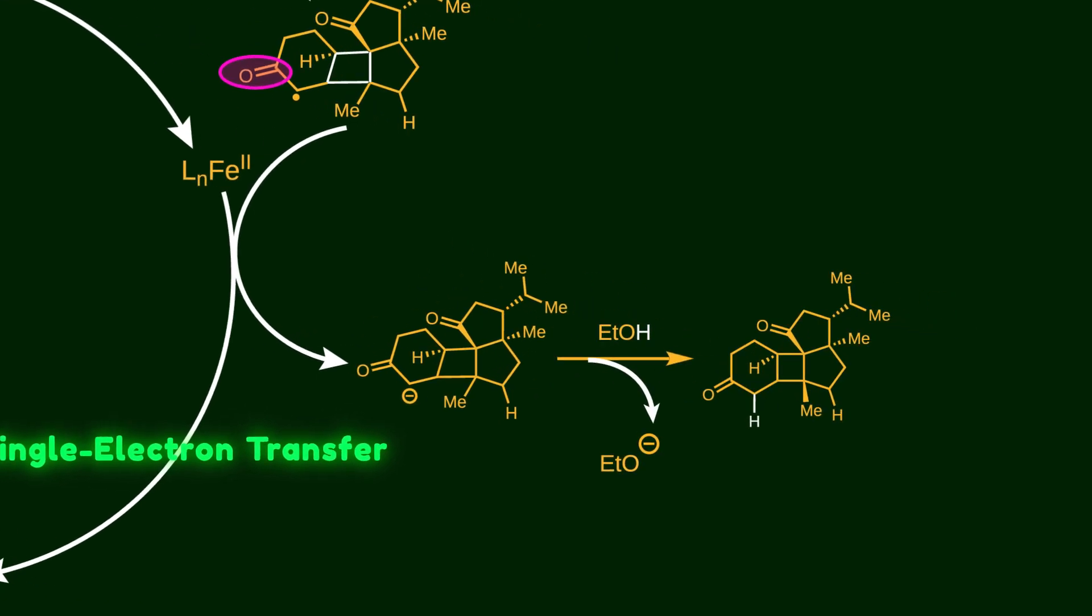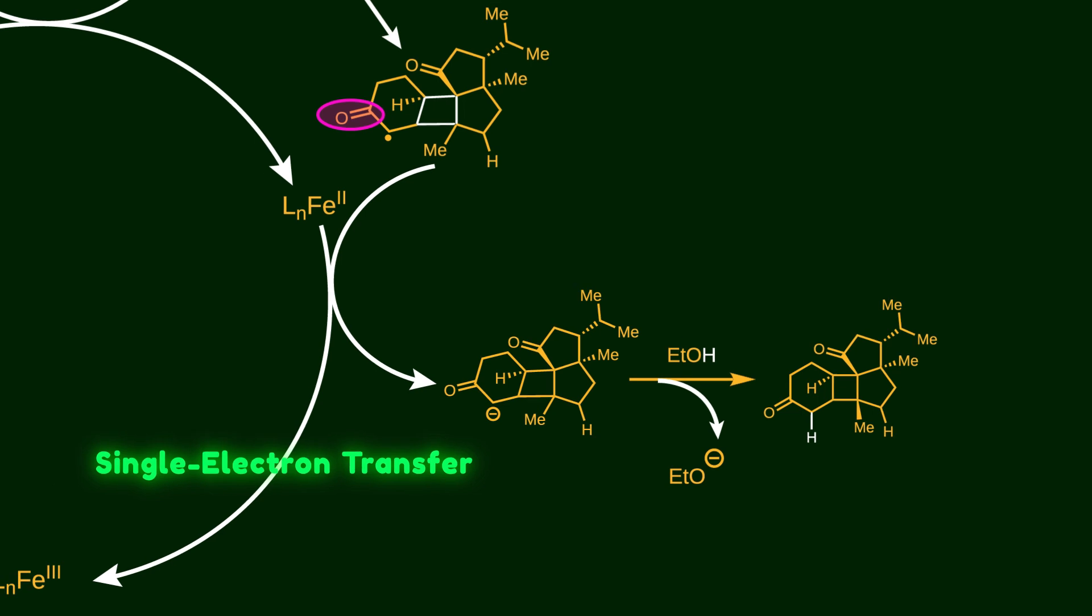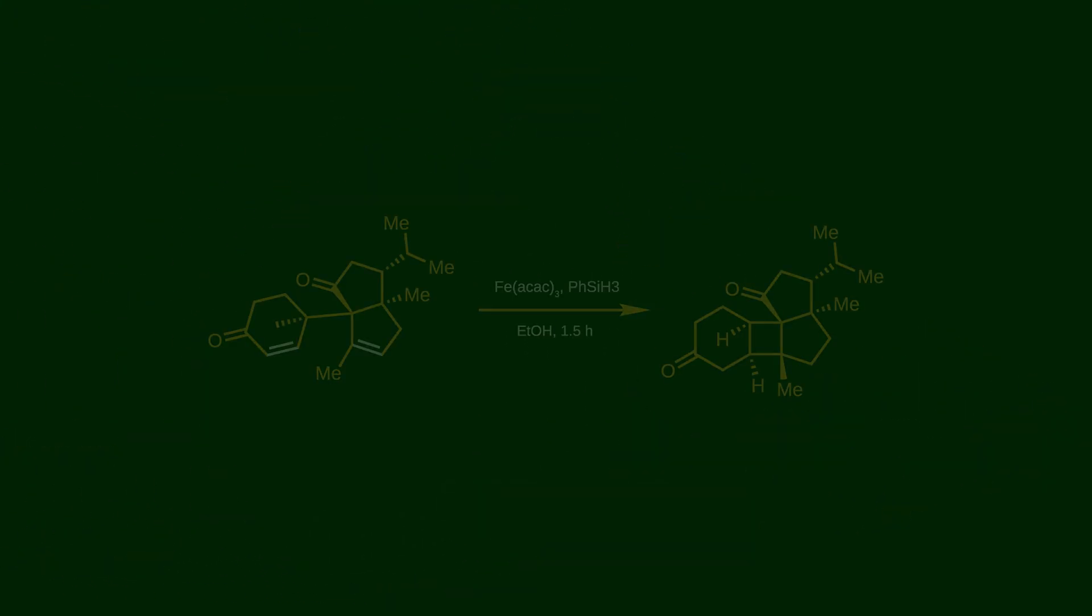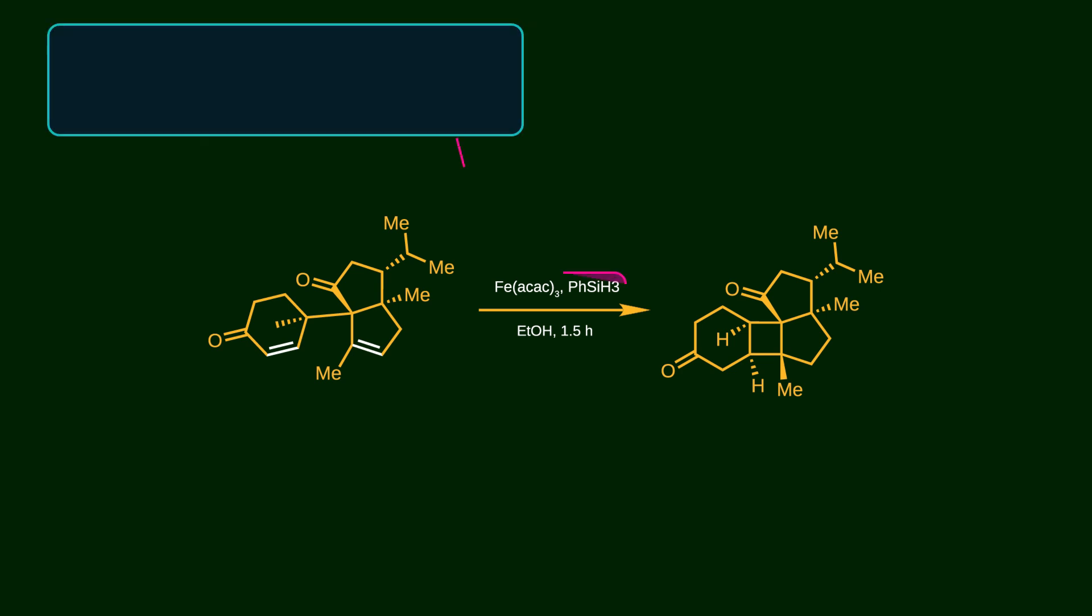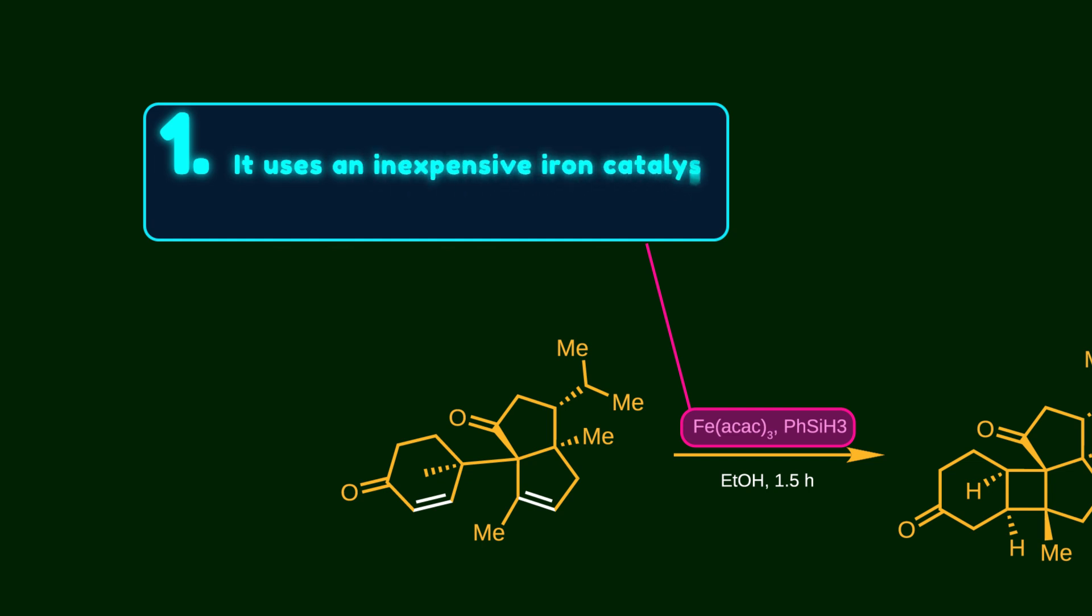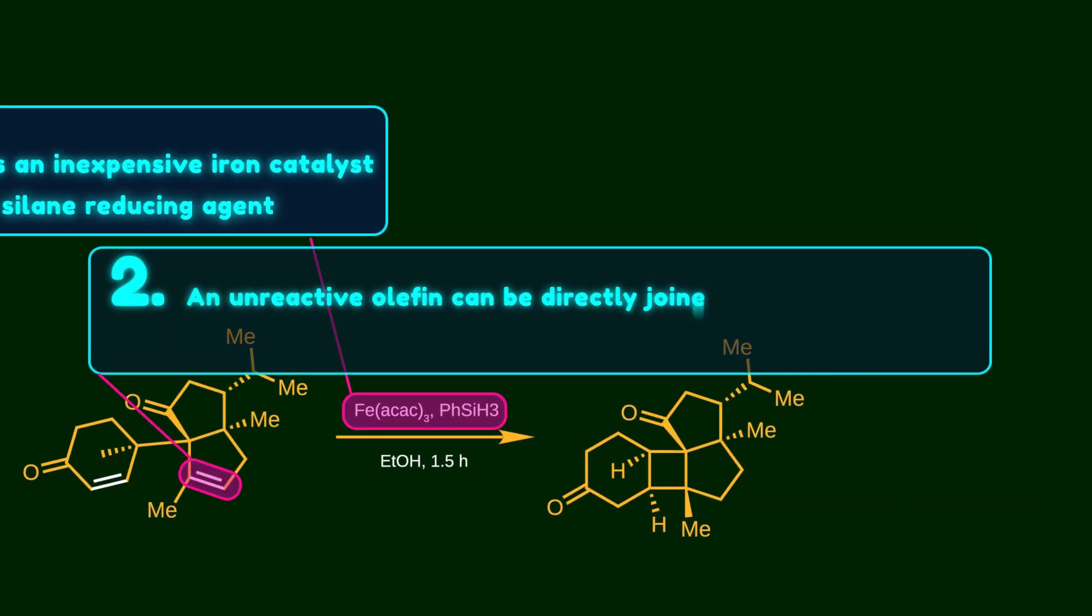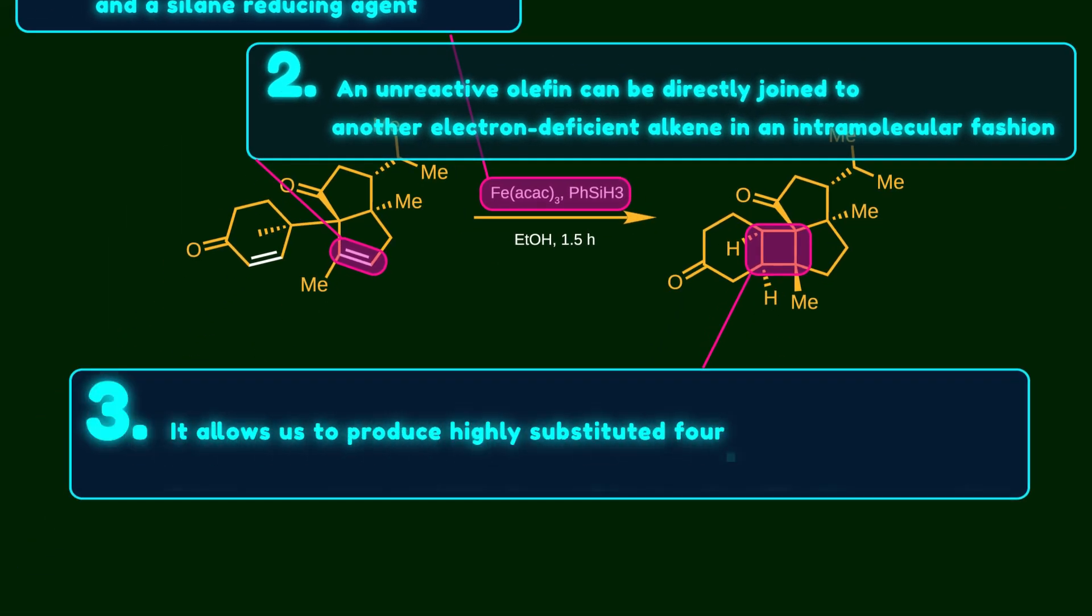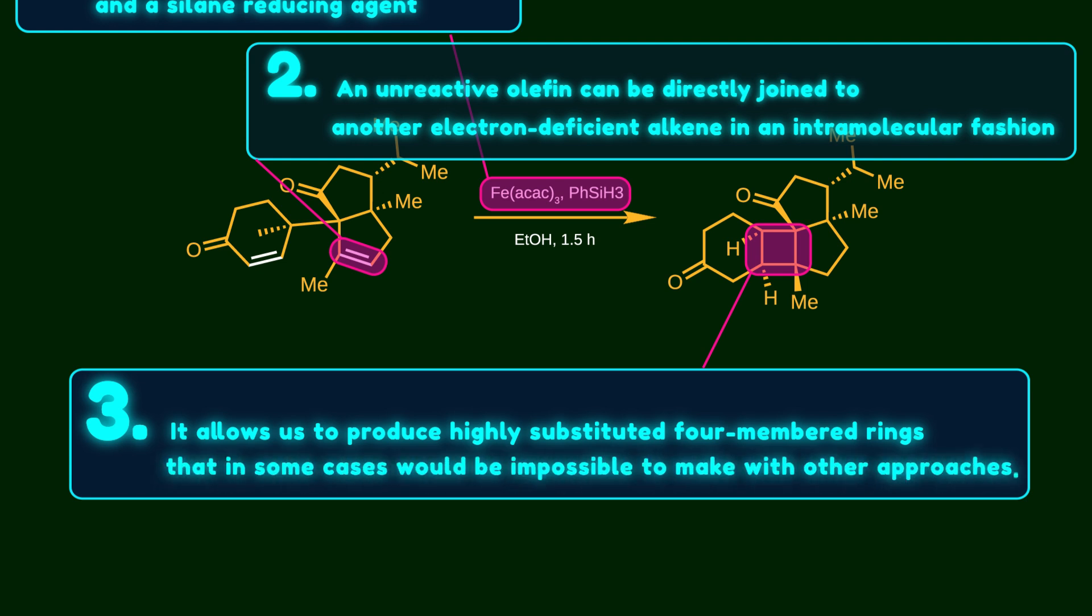Now let's take another look at this beautiful reaction. Forming a four-membered ring is always challenging because of the ring strain, but this approach is really powerful because it uses an inexpensive iron catalyst and a silane reducing agent. An unreactive olefin can be directly drawn to another electron-deficient alkene in an intramolecular fashion. It allows us to produce highly substituted four-membered rings that in some cases would be impossible to make without this approach.